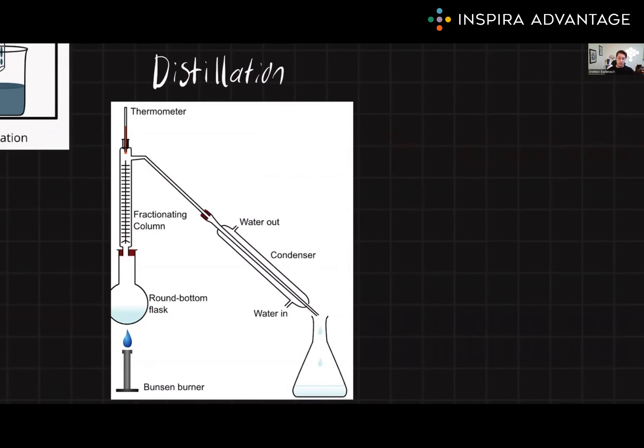There are several types of distillation that I want to talk about, including simple distillation, vacuum distillation, and fractional distillation. The choice of distillation method depends on the boiling points of the liquids being distilled. So if you have two samples that have really big boiling point differences, you'll probably go with simple distillation.